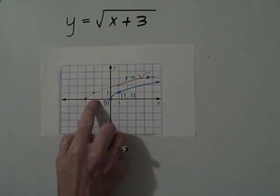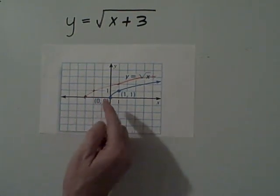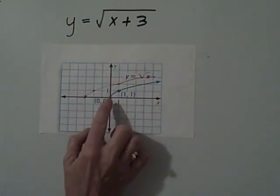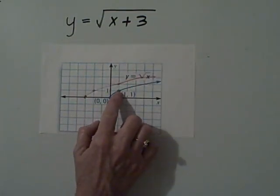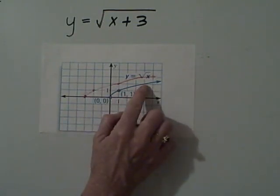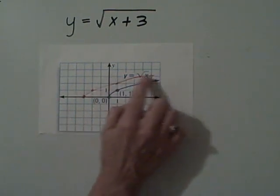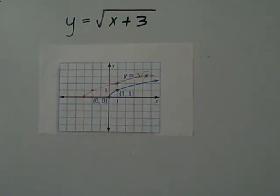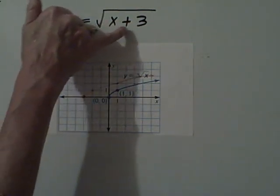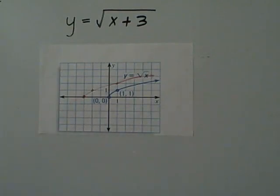So zero would shift over three spaces to the left. Now remember we're going to the negative side because we always do the opposite of what's in here. So this graph, this point, would shift over one, two, three spaces and then this point would shift over one, two, three spaces and then we would draw our line. This is because we now have the graph y equals square root of x plus three. It's shifting to the left.